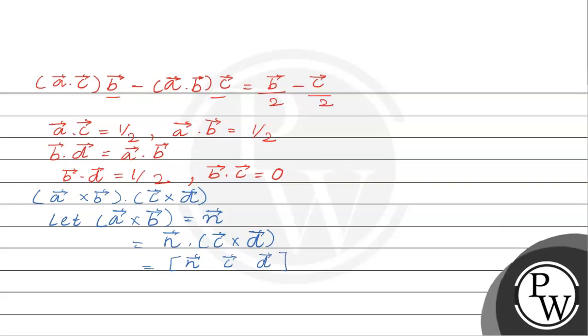So we have n×c·d. Substituting n value we will get (a×b)×c dot product d. Now here a×b will change.